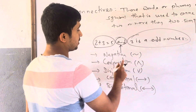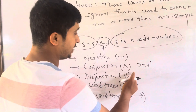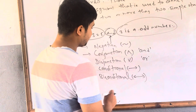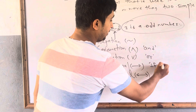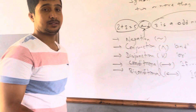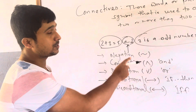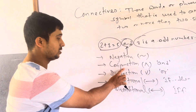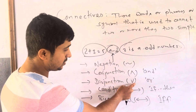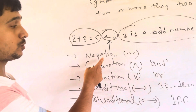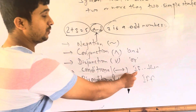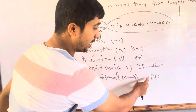Conjunction means AND, disjunction means OR. Conditional means 'if...then', and biconditional means 'if and only if'. So to summarize: conjunction is AND, disjunction is OR, conditional is 'if...then', and biconditional is 'if and only if'.